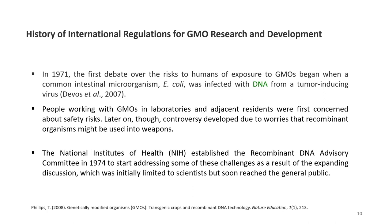Let us now look into the brief history of international regulations of genetically modified organism research and development. In 1971, the first debate over the risks of human exposure to genetically modified organisms began when a common intestinal microorganism, E. coli, was infected with DNA from a tumor-inducing virus. People working with GMOs in laboratories and adjacent residents were first concerned about safety risks, and controversy developed due to worries that recombinant organisms might be used in biological weapons. The National Institutes of Health established the Recombinant DNA Advisory Committee in 1974, as a result of the expanding discussion which was initially limited to scientists but soon reached the general public.